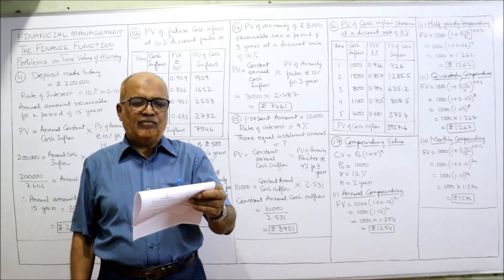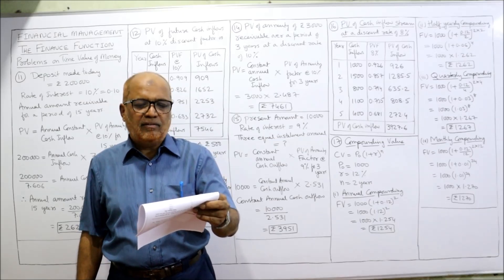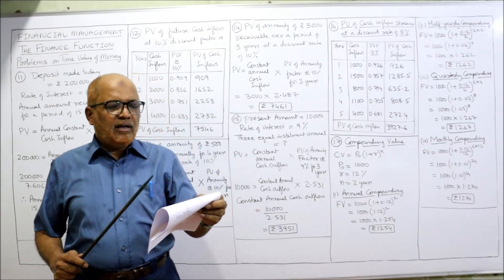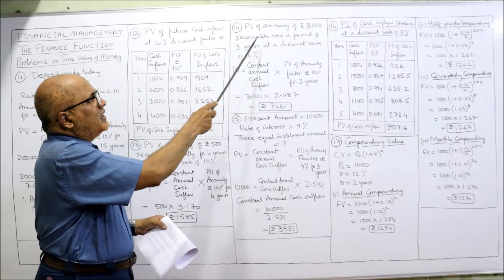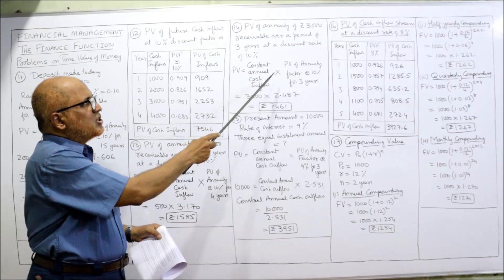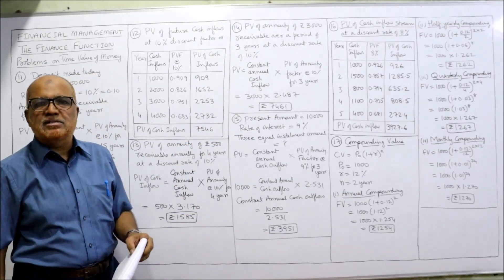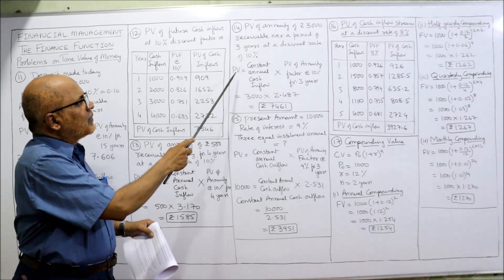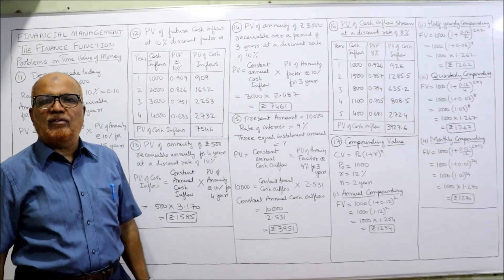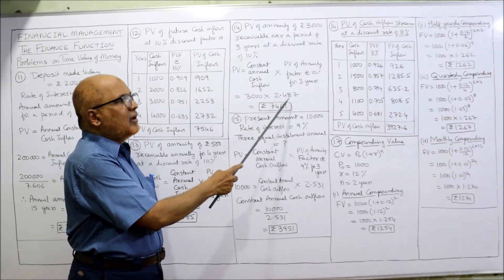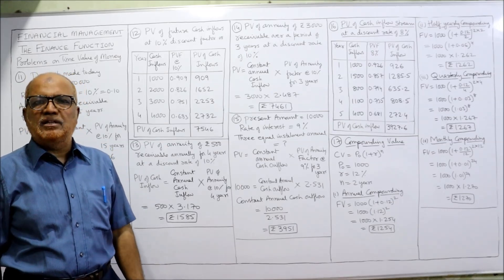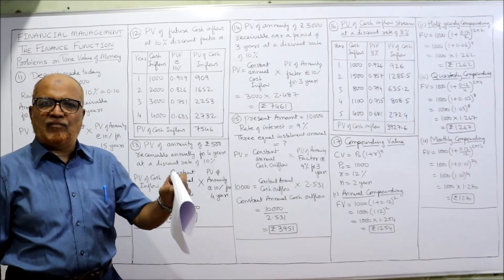Problem 14: Find the present value of an annuity of 3,000 rupees over 3 years when the discount rate is 10%. This is exactly similar to the previous problem. Every year we receive 3,000 rupees. PV = Constant Annual Cash Inflow × PV of Annuity Factor at 10% for 3 years. The annuity factor from the table is 2.487. So 3,000 × 2.487 = 7,461 is the present value.